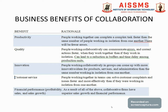In terms of productivity, people working together can complete tasks faster than the same number of people working in isolation, with fewer errors. Regarding quality, people working collaboratively can communicate errors and correct them, as compared to working in isolation, which can lead to reduction in errors and fewer time delays among production units.